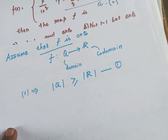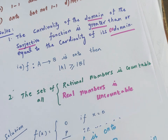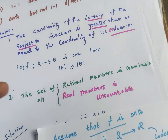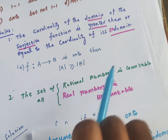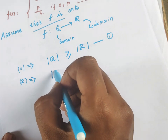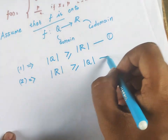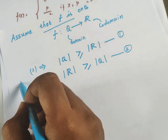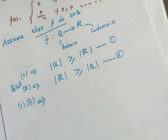Using the second result, the rationals are countable and the reals are uncountable. So the cardinality of Q is countable, and the cardinality of R is uncountable. Comparing these two results, if f were onto, we would need the cardinality of Q to be greater than or equal to the cardinality of R. But this leads to a contradiction.